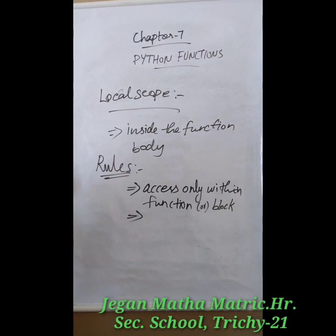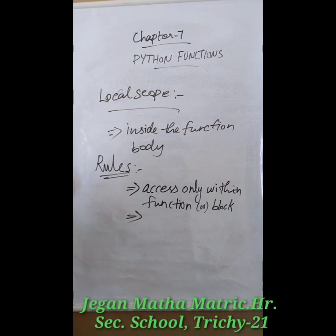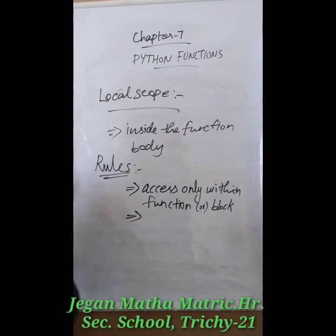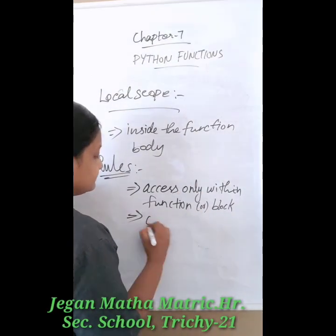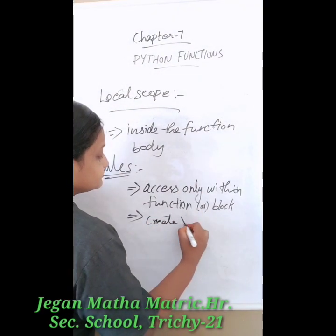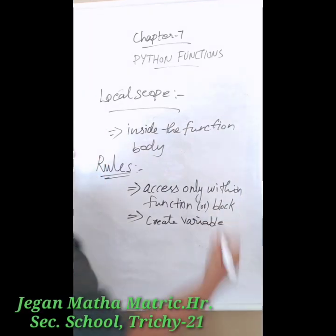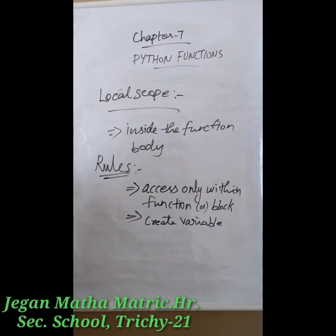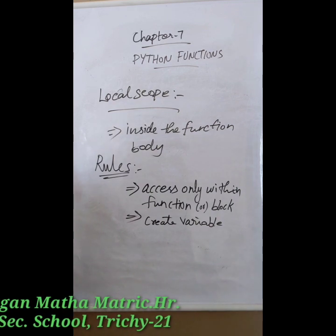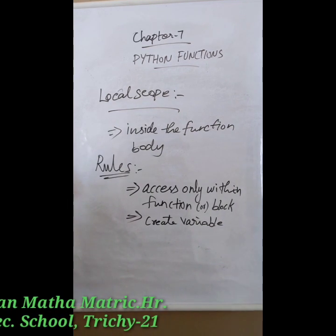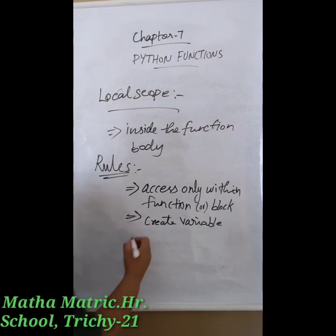The second rule: when a variable is created inside the function block, the variable becomes local to it — once we create a variable inside a function, it automatically becomes local. The third rule: a local variable only exists while the function is being executed.